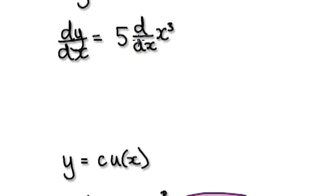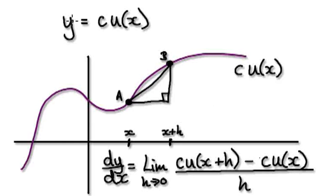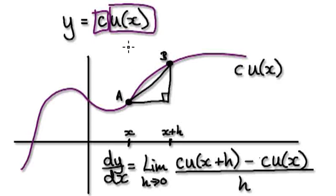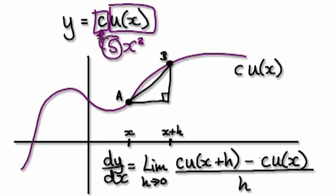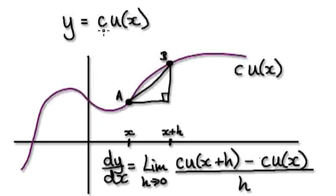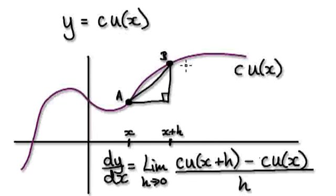And the reason why that works is because of this. Suppose you have y equals a constant and then you've got something involving x. So in our case, u(x) was x to the power of 3, and this c here is just a constant — it's like our 5. It's just a constant, it doesn't change. Whereas this u(x) here, it depends — it's acting upon x, it's a function of x, meaning it's going to do something to x.